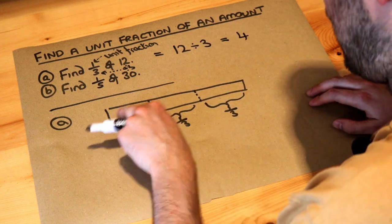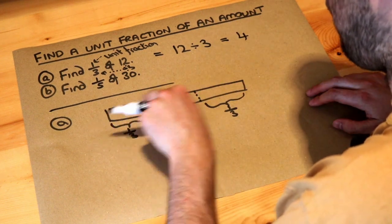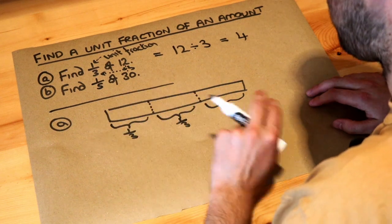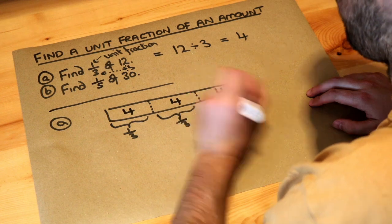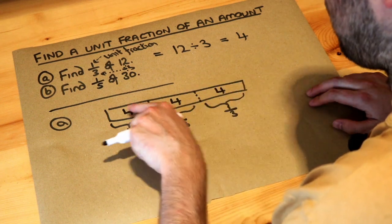That means each of these thirds that we have, each of those will be worth 4. So that's worth 4, that's worth 4, that's worth 4, and so in total, 4 plus 4 plus 4 is 12.